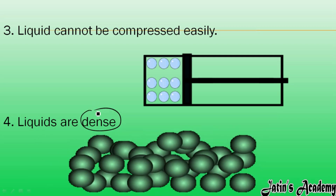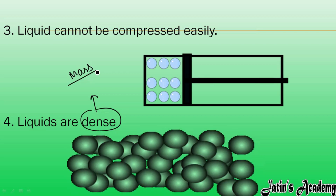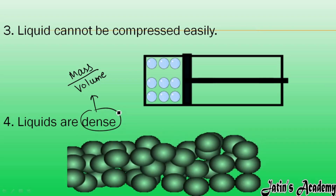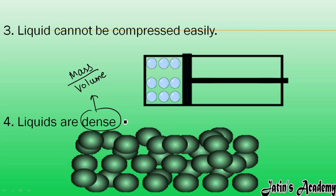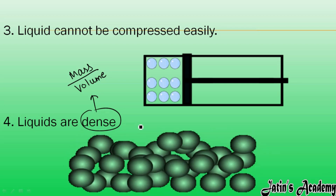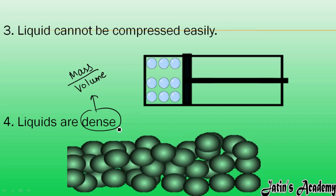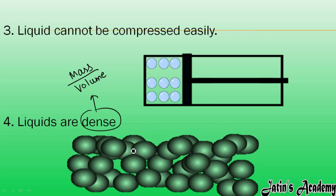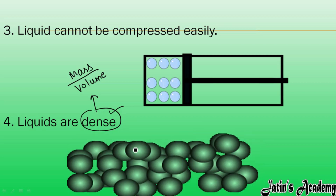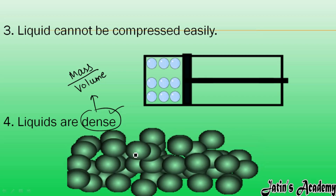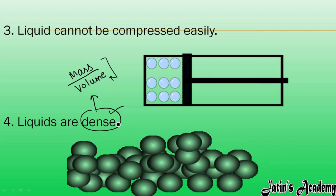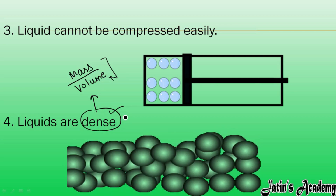The next characteristic is that liquids are dense. Dense means mass per unit volume — you will study density in grade 7 or 8, but here I will explain it. Dense means, in Hindi, 'sanghana' — particles are very close to each other. In liquids, particles are also close to each other, so when more particles are present per unit volume, that is known as density. So liquids are dense.